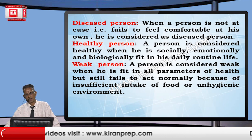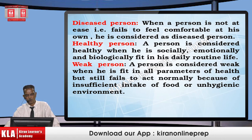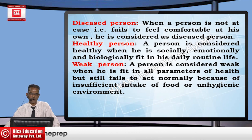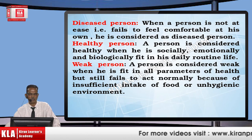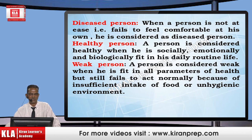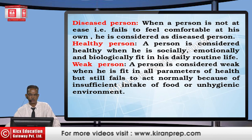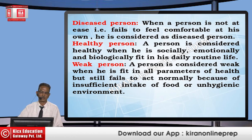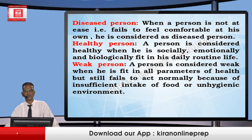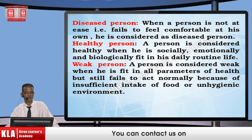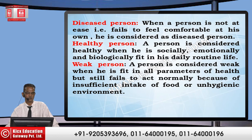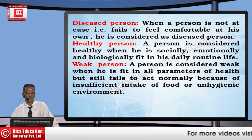A person is considered healthy when they are socially, emotionally, and biologically fit. Socially fit means they are okay when interacting with friends, elders, and youngers. Emotionally, they think rationally and don't shout unnecessarily. Biologically, they are able to sit, walk, and run. For instance, the glasses on my eyes put me biologically into the category of a diseased person, because biologically my eyes are not okay.